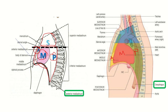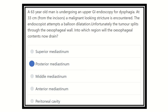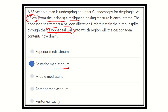So the esophagus drains its content into the posterior mediastinum. Our final answer is the posterior mediastinum, because the esophagus at 33 centimeters from the incisor teeth lies in the posterior mediastinum. So rupture of the esophagus means all content will go directly to the posterior mediastinum, not any other area. Thank you.